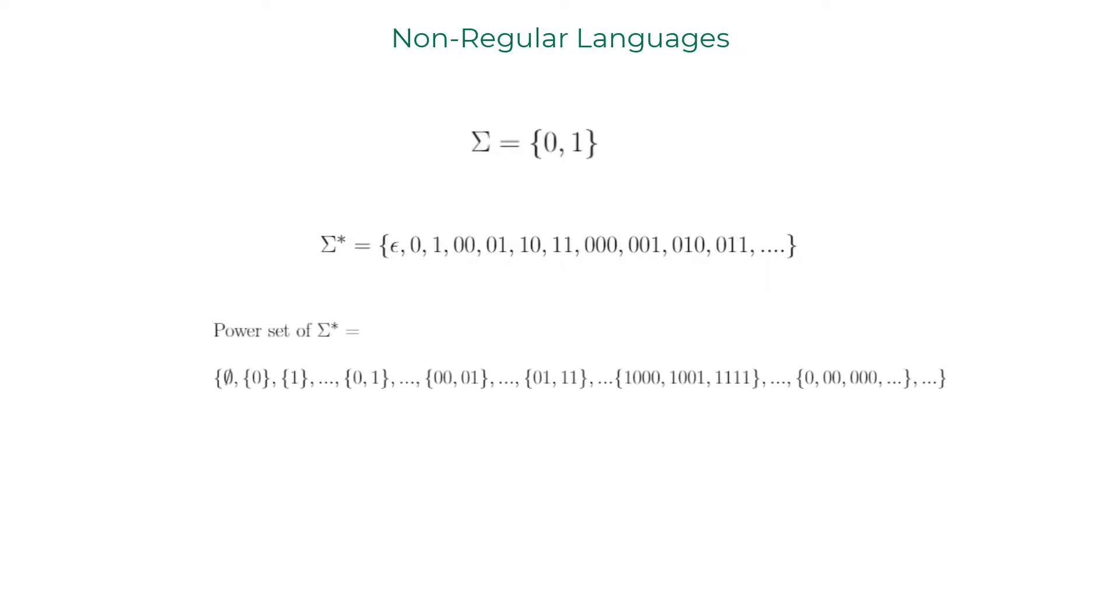If you evaluate the power set of sigma star, you get all the possible languages over the alphabet sigma, which we already proved to be uncountably infinite. Remember the power set of natural numbers is uncountably infinite proof? If not, watch the lecture video on symbols and languages again.